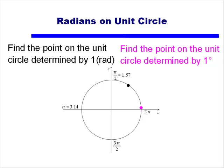So I want you to understand that if I ask you to show me the point determined by 1, or the point determined by 1 degree, they're two very different numbers. There's 360 degrees in a circle, but there's only 6.28 radians in a circle.